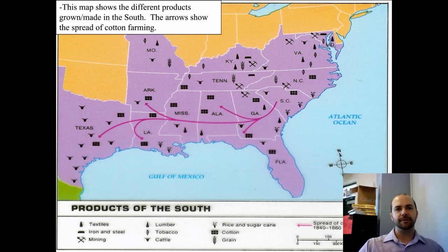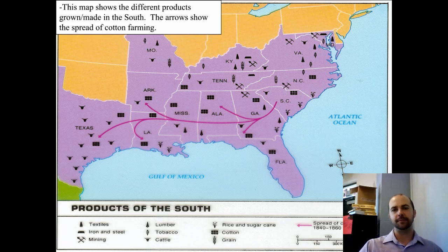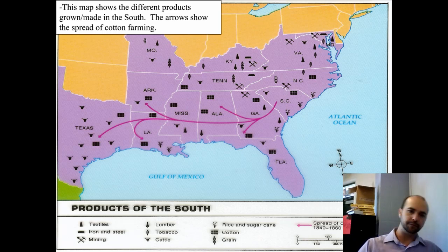Here's a map showing different products grown and made in the South. The arrows show the spread of cotton farming moving west as our nation grows west. As the land is used up and nutrients are taken out of the soil, cotton moves west to more fertile land.